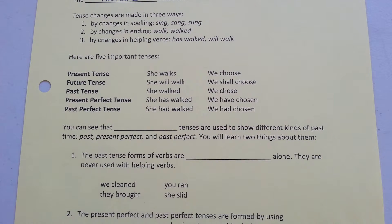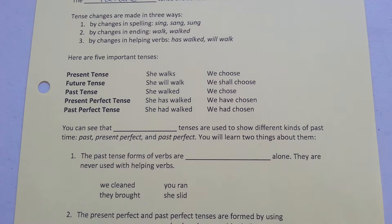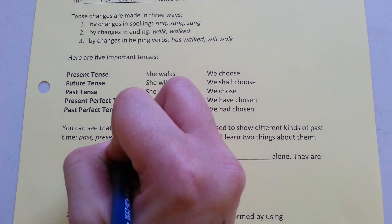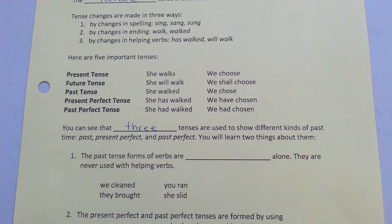Here are five important tenses. We have the present tense, the future tense, and the past tense. And then we have the present perfect tense and the past perfect tense. Three of these tenses are used to show different kinds of past time: the past, the present perfect, and the past perfect.